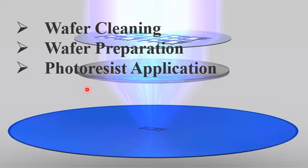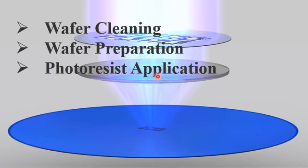Typically, the photoresist is spun for 15 to 30 seconds and the spinning rate used is in the range of 2000 to 6000 RPM. So in summary: first we clean the wafer, in the second step we prepare the wafer according to the photoresist, and in the third step we deposit the photoresist onto the surface of the wafer.